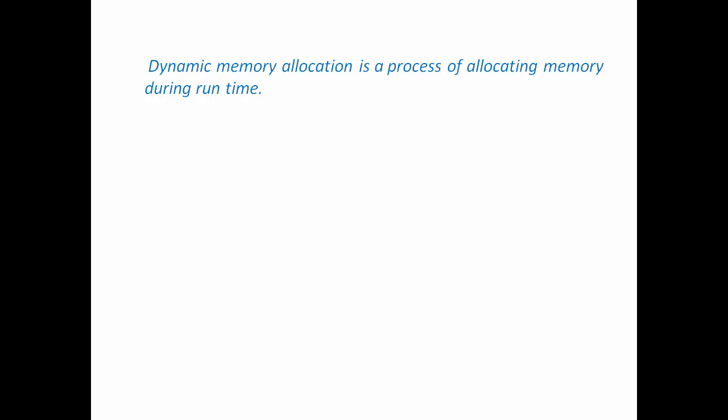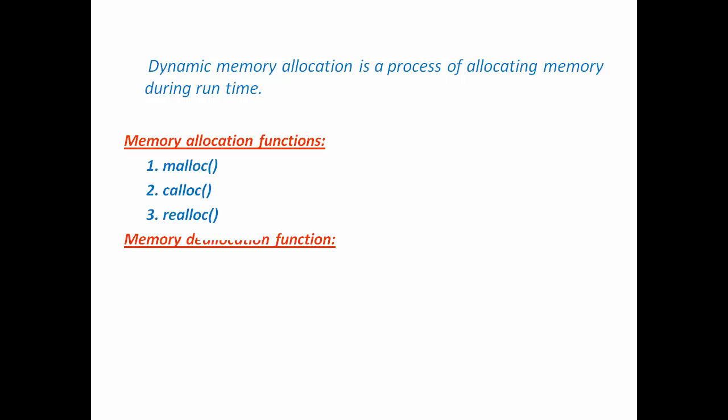So what is the solution? The solution is dynamic memory allocation. Using dynamic memory allocation, we can allocate exact memory space what we need. C provides us some library functions that are used to allocate memory: malloc, calloc, and realloc. C provides another function to deallocate memory, it's called free.